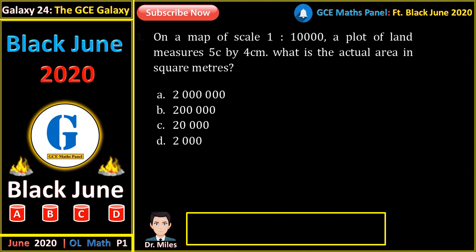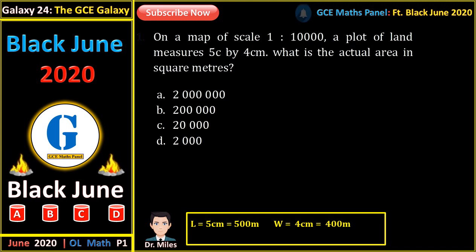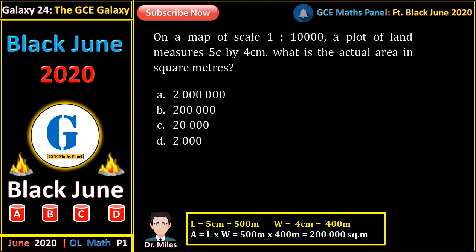On a map of scale 1 to 10,000, a plot of land measures 5 centimeters by 4 centimeters. What is the actual area in square meters? 100 centimeters is 1 meter. On the map, 5 cm corresponds to 500 meters and 4 cm corresponds to 400 meters. Since the scale is 1 cm to 10,000 cm, the area being length times width gives us 200,000 square meters.